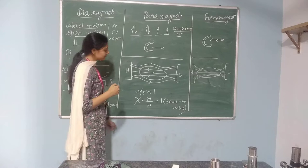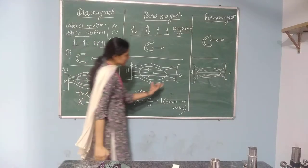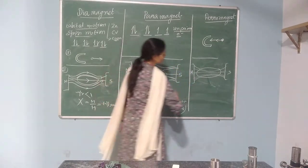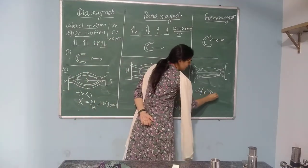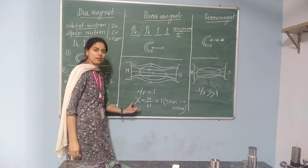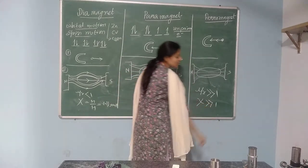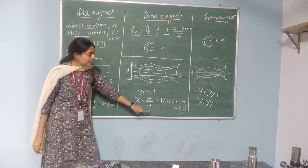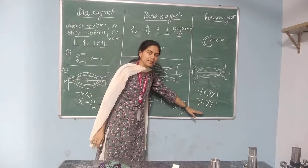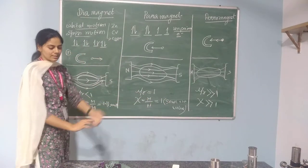For the ferromagnetic material, the magnetic permeability is greater than 1, and similarly the susceptibility — magnetization divided by magnetic field — is a larger value, greater than 1. So this is about the magnetic permeability and susceptibility. This is the first differentiation between the three materials.